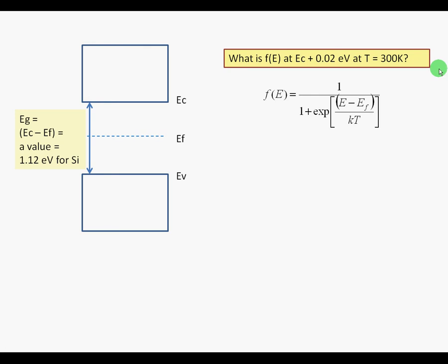This is an example of how to solve the Fermi function at a specific energy. Note that you need to draw the band diagram to solve these problems. In this case, F of E is to be evaluated at Ec plus 0.02 electron volts at 300 Kelvin.